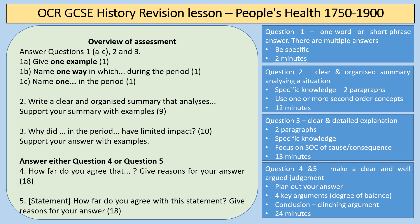In terms of how you're assessed for people's health, you have three gateway questions. Question two is a clear and organised summary that analyses — you need to write two paragraphs linked to one or more second order concepts. Question three is a 'why' question or a 'what was the impact of' question — a cause and consequence question — again two paragraphs. Question four or five is the 'how far do you agree' question. On people's health, questions quite often ask you to compare different time periods. You need four key arguments with a degree of balance, a conclusion and a clinching argument.